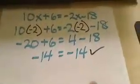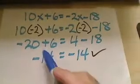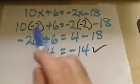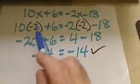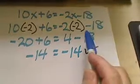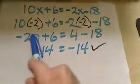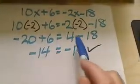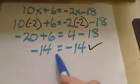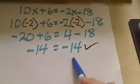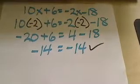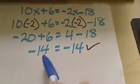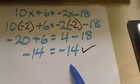Now after doing all that hard work, we want to double check our work. So we plug that value that we found into the variable and use our order of operations, or PEMDAS. And once we are finished and we have the same number equal to itself, we know we found the right value and the equation is true.